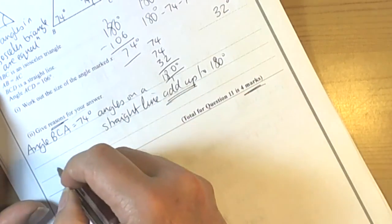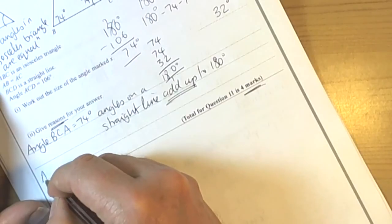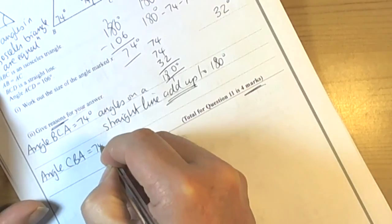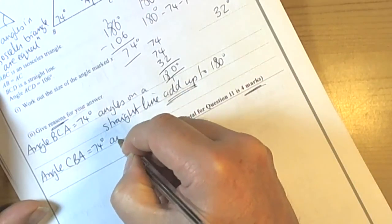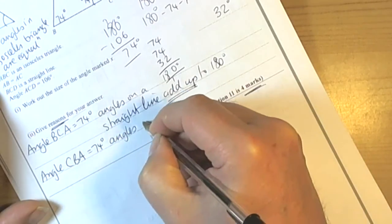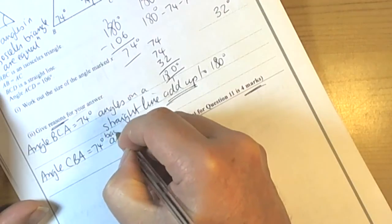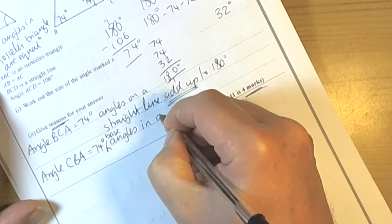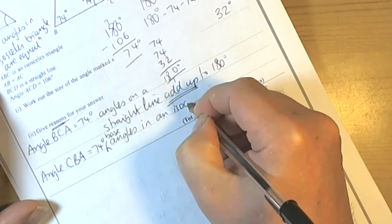We now know that we've got angle CBA is also 74 degrees. We've already given the reason above, but sorry, we need the word base there. So base angles in an isosceles triangle are equal.